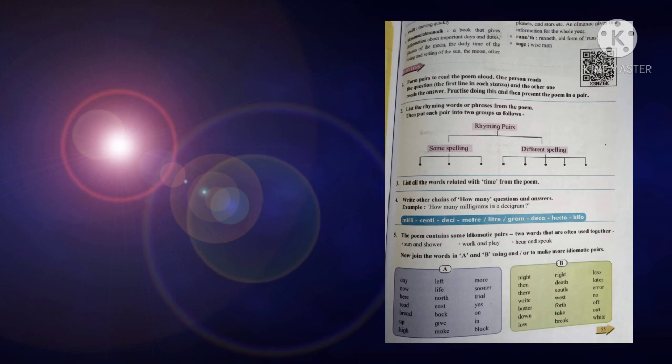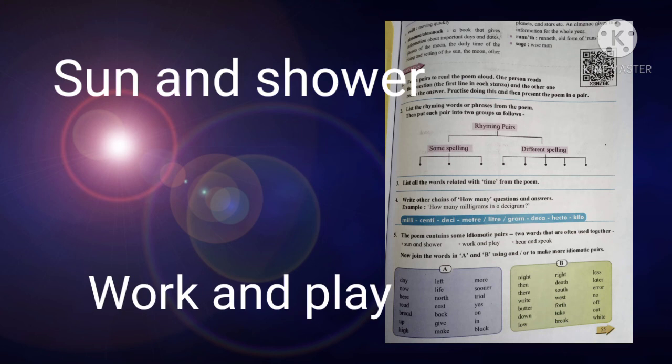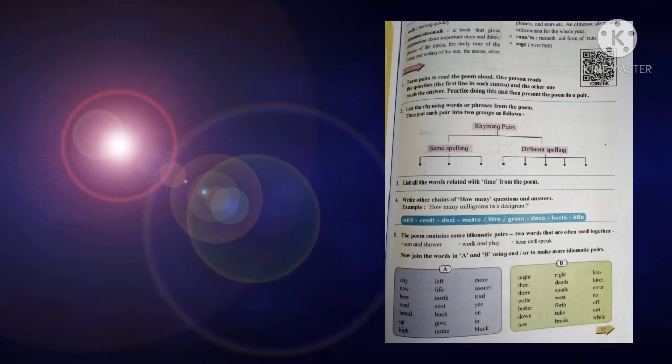Did you understand? Will you prepare same questions from liter also? Okay, now question number five: the poem contains some idiomatic pairs, two words that are often used together. For example, sun and shower, work and play, hear and speak.